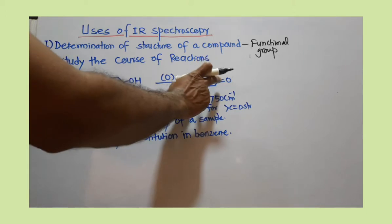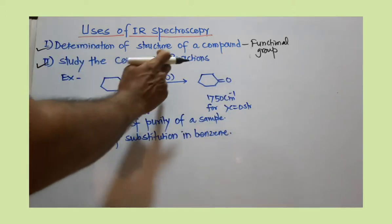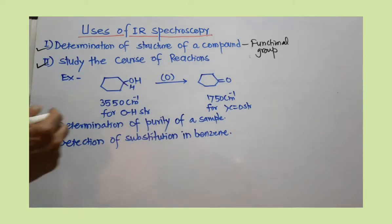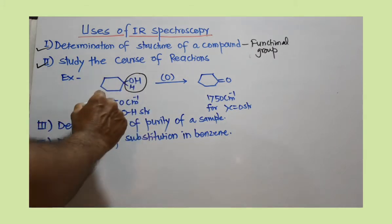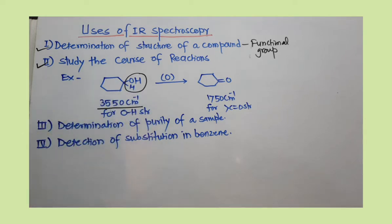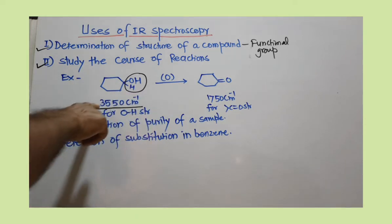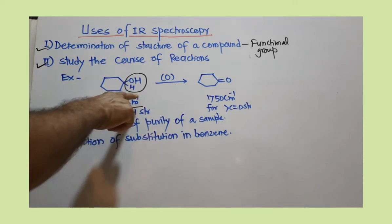Cyclohexanol is converted to cyclohexanone, an oxidation reaction. Initially you can observe there is a hydroxyl group. If there is a hydroxyl group, it will show the IR band nearly at 3500 cm⁻¹.